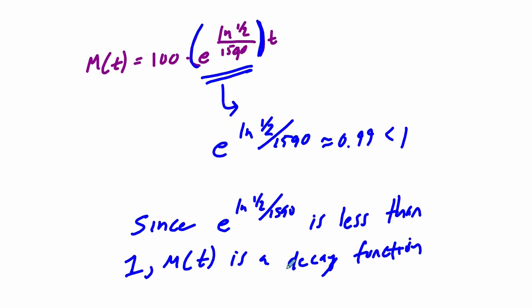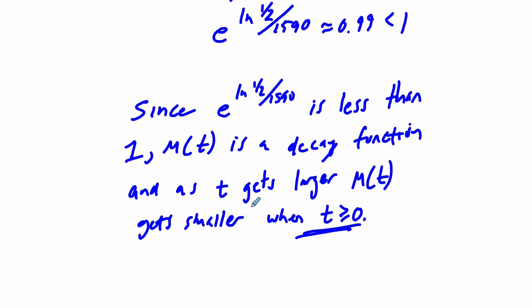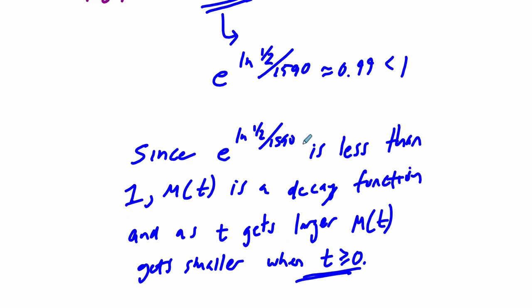And I would just say what that means. So what does that mean? As T gets larger, M(t) gets smaller when T is greater than or equal to 0. So that little last part is needed because the decay function, you can see it here, it's always true that it's getting smaller as T is increasing, right? But I want to specify that when T is greater than or equal to 0 in this problem because of this factor right here. T is represented in years.